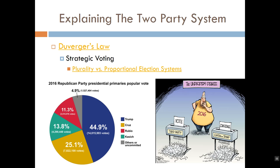At this point you should understand Duverger's Law, the difference between plurality and proportional electoral systems, and why our use of plurality systems is the number one most important factor explaining why two parties dominate even though Independents outnumber them in the general population. I'll upload videos and links to help illustrate strategic voting and these electoral systems before you begin quizzes or assignments. Thank you for watching — I'll see you next time.